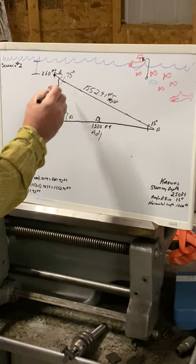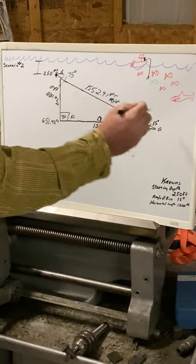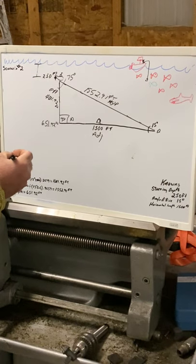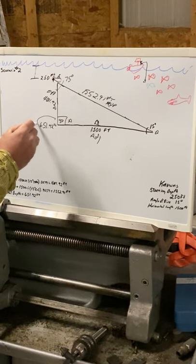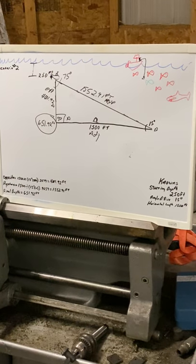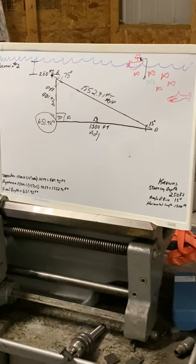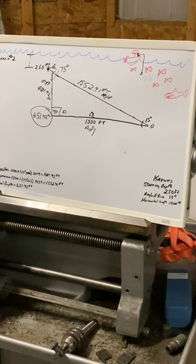15 plus 75 gives you 90, plus 90 gives you 180. That completes the triangle. You have all your known sides, your distance, and my total depth at the end of the dive. And that's scenario two.